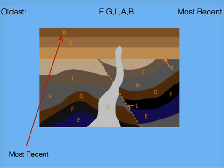Layer B is not interrupted by either the fault or the intrusion. Therefore, B must have been laid down after the fault and the intrusion. The final chronology from the oldest to the most recent is E, G, L, A, B.